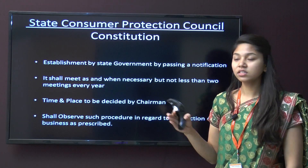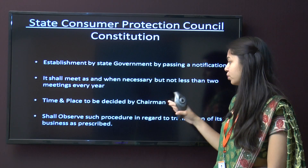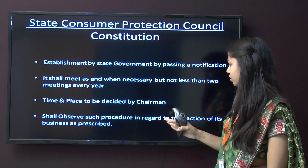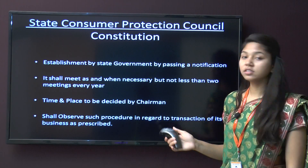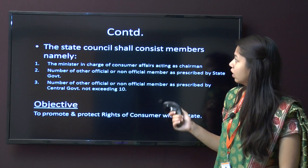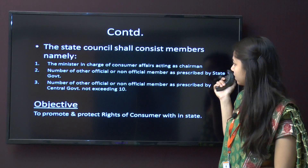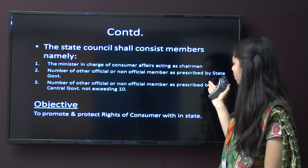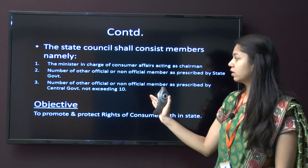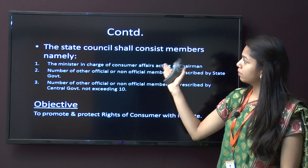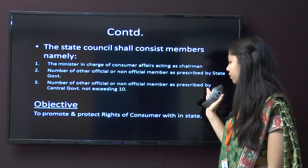They can meet when it is necessary or when they find the need. Time and place are to be decided by the chairman, who shall observe such procedure in regard to the transaction of its business as prescribed. The state council shall consist of: the Minister in charge of Consumer Affairs as chairman; a number of other official or non-official members as prescribed by the state government; and members as prescribed by the central government, not exceeding 10. The objective is to promote and protect the rights of consumers within the state.